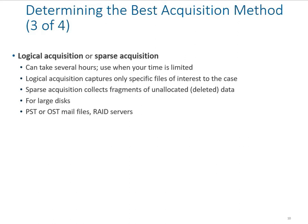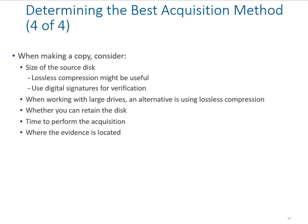When creating a copy, consider the size of the source disk — you must note the original hard drive size, otherwise you risk losing data through compression. The digital signature should be verified once data is copied. For larger hard drives, an alternative is using lossless compression — only use compression if the tool claims the data remains intact. The contingency plan for image acquisition will be covered in the next lecture.